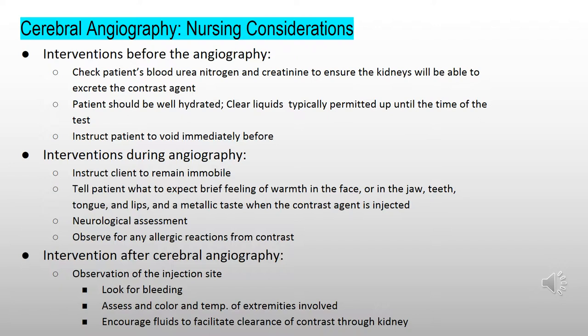Nursing considerations for a cerebral angiography include interventions before, during, and after the test. Before the angiography, the nurse should check the patient's blood urea nitrogen and creatinine levels to ensure the kidneys will be able to excrete the contrast agent. The nurse should make sure the patient is well hydrated and instruct the patient to avoid eating immediately before. During the angiography, the nurse should instruct the client to remain immobile and tell the patient what to expect, such as a feeling of warmth in the face, jaw, teeth, tongue, and lips, and a metallic taste when the contrast agent is injected. A neurological assessment is conducted during and immediately after to observe for an embolism or arterial dissection. The nurse should also observe for any allergic reactions from the contrast.